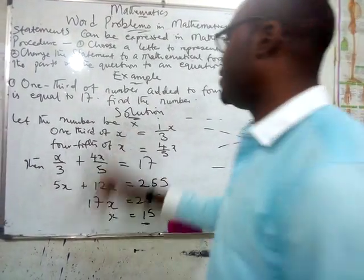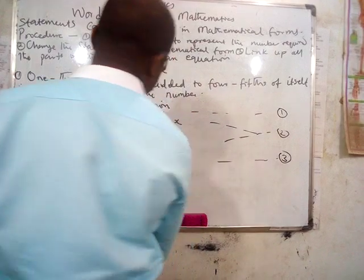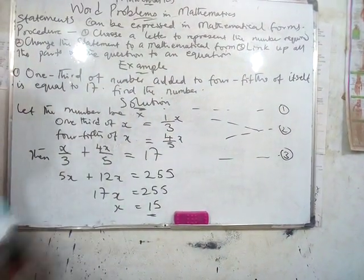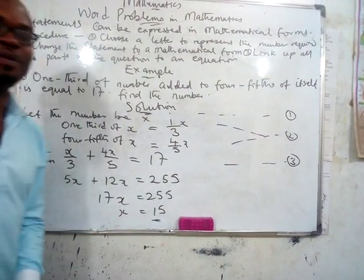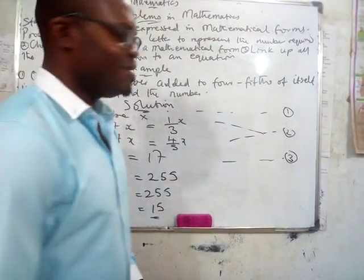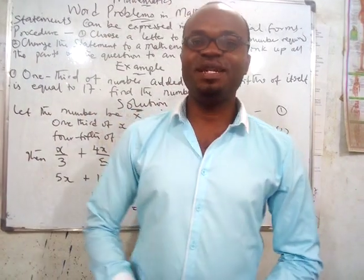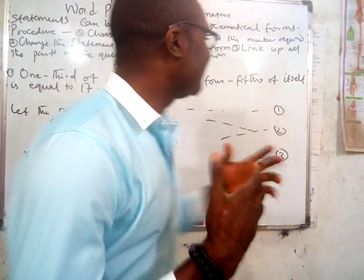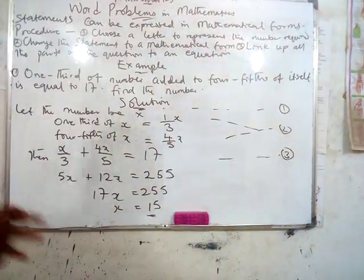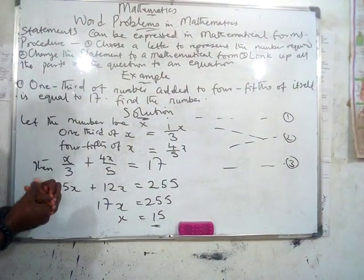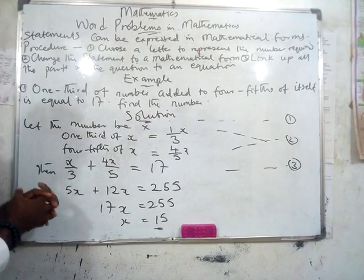Making x the subject, x = 255 ÷ 17 = 15. So that number is 15. And that is how you go about solving word problems. Once you solve word problems in this way, it becomes very simple.